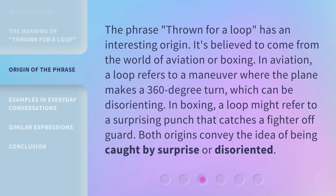The phrase thrown for a loop has an interesting origin. It's believed to come from the world of aviation or boxing. In aviation, a loop refers to a maneuver where the plane makes a 360-degree turn, which can be disorienting. In boxing, a loop might refer to a surprising punch that catches a fighter off guard. Both origins convey the idea of being caught by surprise or disoriented.